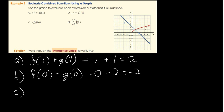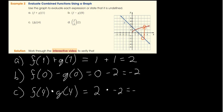For c, f times g of 4 equals f of 4 times g of 4. Looking at the graph, f of 4 looks like it is 2. And g of 4 looks like it is negative 2. So 2 times negative 2 equals negative 4.